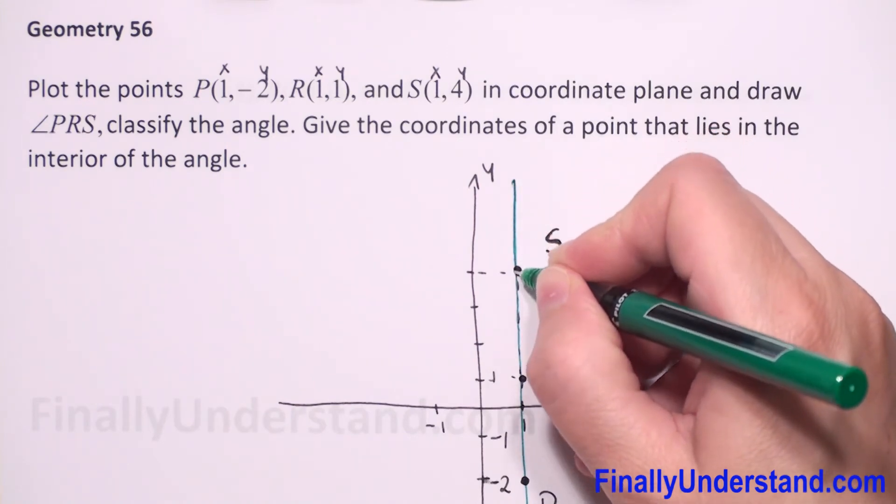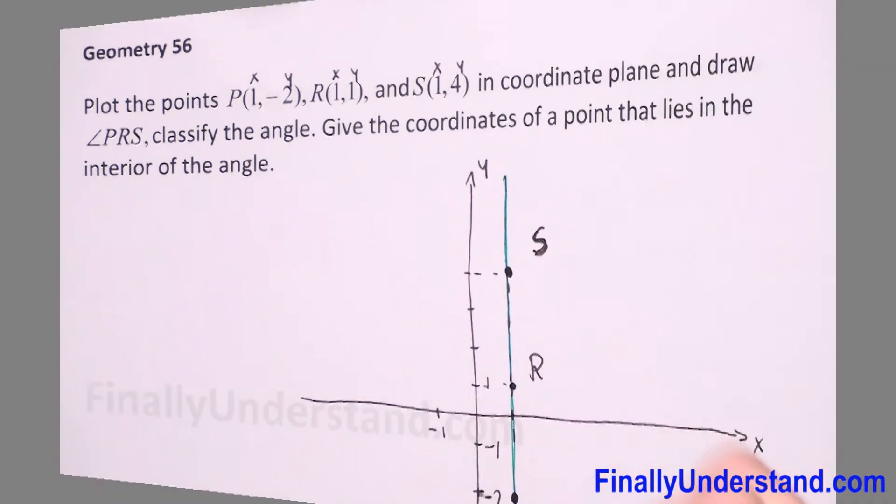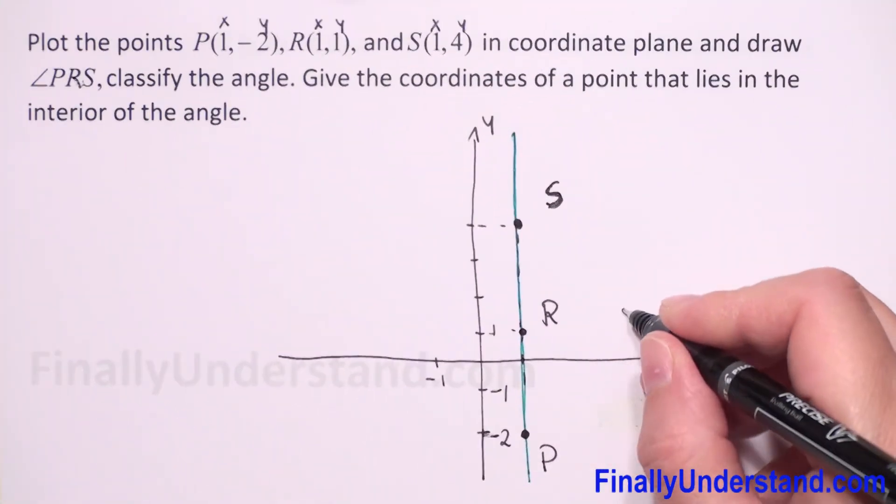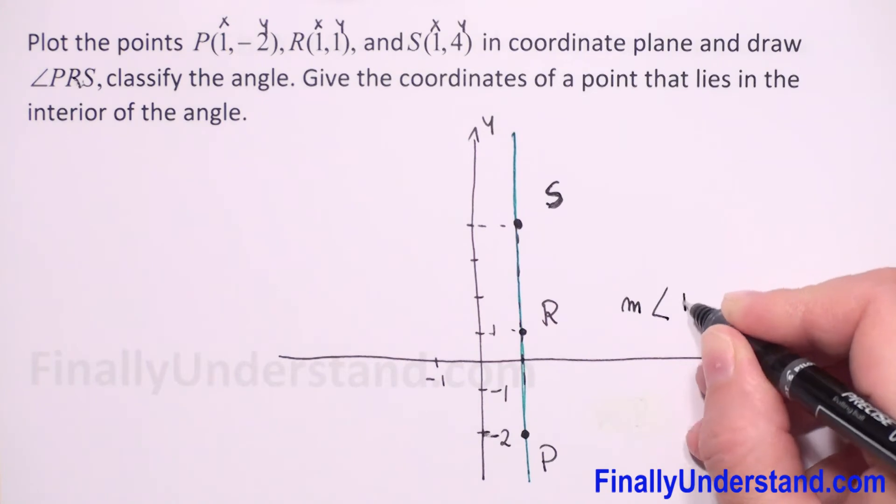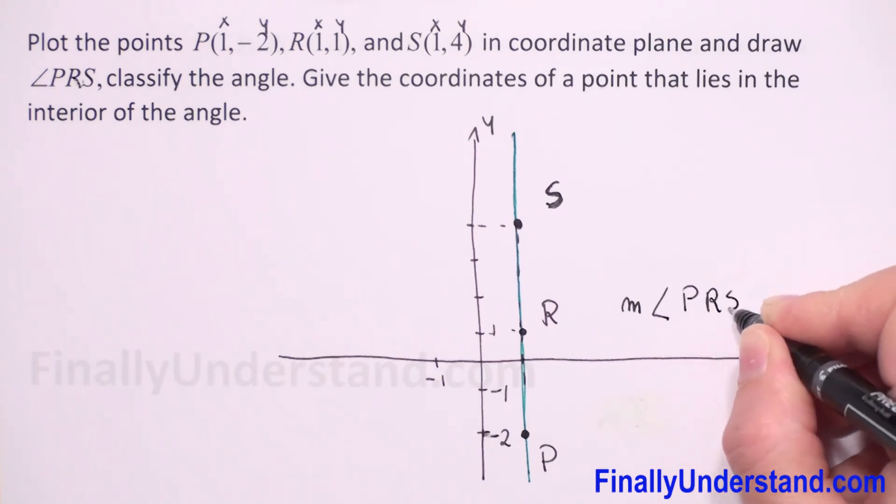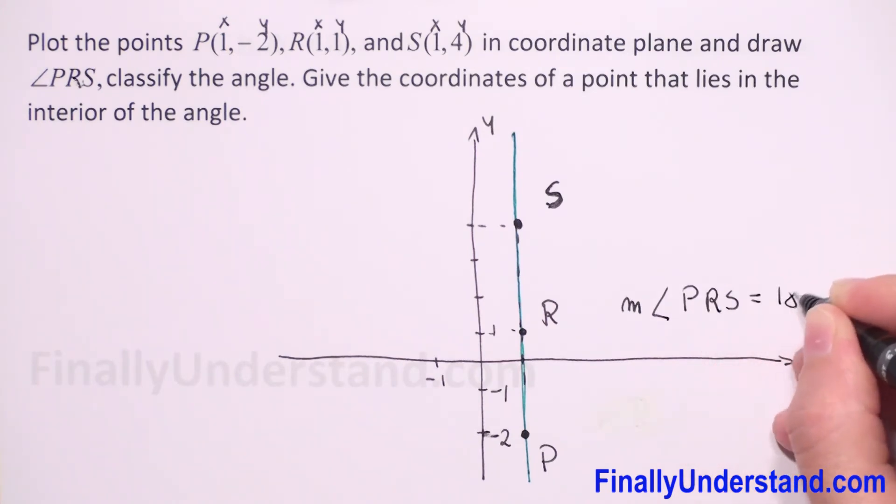It means that the measure of our angle, angle PRS, is equal to 180 degrees. We got a straight angle.